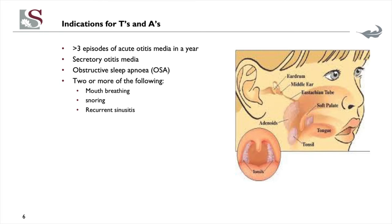When do we admit them? If the mom says he stops breathing, we don't send those kids away. It's important this patient is discussed with a paediatrician or ENT. They will do T's and A's — removal of tonsils and adenoids — only if the patient has episodes of otitis media greater than three in a year, or if they have secretory otitis media — called glue ear — where they put grommets. And obviously if they have obstructive sleep apnoea at night.